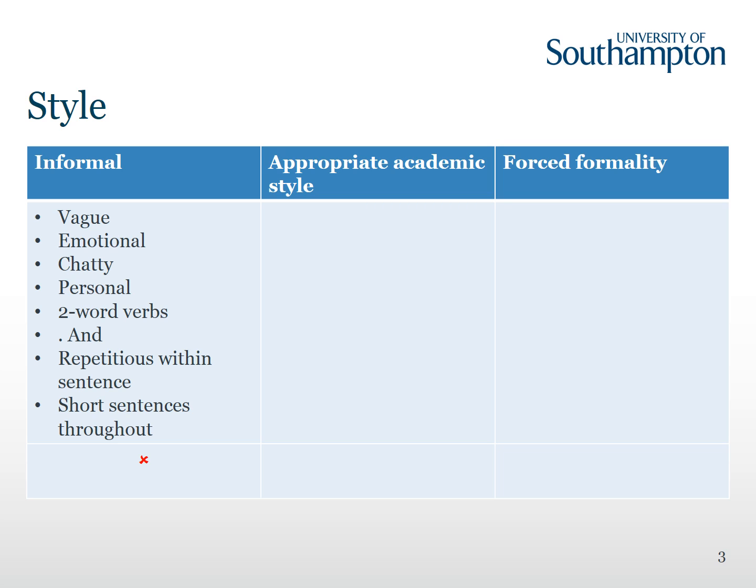We'll look first at being too informal. There are various things that you need to avoid. The first is vague language, and particularly words like something, anything, and stuff. You should also avoid being too emotional, so saying things like surprisingly or unfortunately. You should avoid being too chatty or too personal, using we, I, or our. Often the passive is used instead.